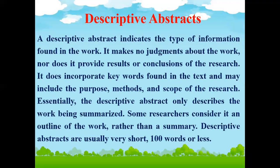Descriptive abstract is the second type. A descriptive abstract indicates the type of information found in the work. It makes no judgment about the work, nor does it provide research conclusions. It does incorporate keywords found in the text and may include the purpose, methods, and scope of the research. Essentially, the descriptive abstract only describes the work being summarized, in not more than 100 words, focusing on keywords and the crux information.